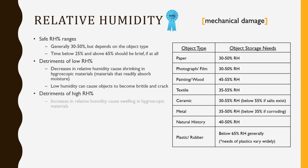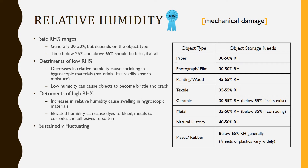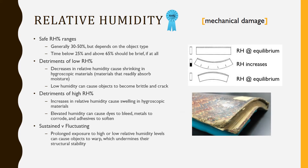High relative humidity, on the other hand, causes hygroscopic materials to swell, in addition to causing dyes to bleed, metals to corrode, and adhesives to soften. And just like with temperature, relative humidity levels can be sustained or fluctuate, and fluctuations are okay as long as they occur slowly and don't go too high or too low. Prolonged exposure to high or low relative humidity can cause objects to warp, and this distortion can occur from a single prolonged exposure or from repeated exposures.